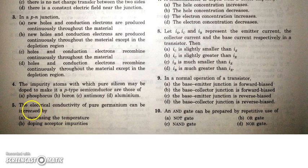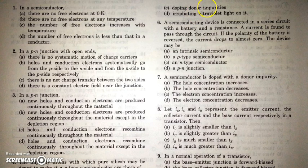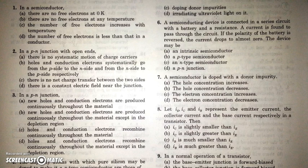In the next question, the electrical conductivity of pure germanium can be increased by: increasing the temperature — obviously yes; doping with acceptor impurities — yes; doping with donor impurities — obviously yes; irradiating with ultraviolet light — obviously yes, because UV light can break some bonds, producing conduction electrons and holes, which increases the conductivity of the semiconductor.